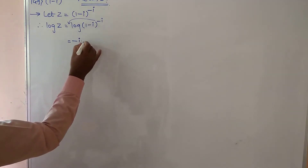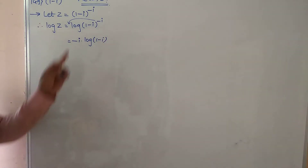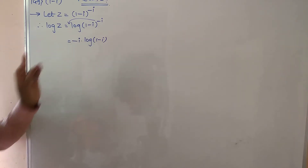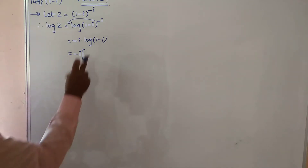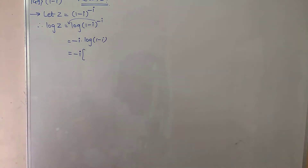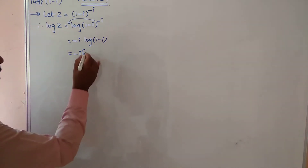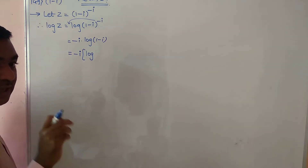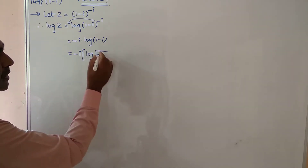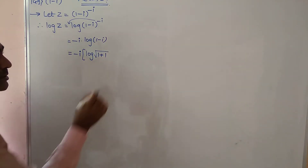Using the rule log(m^n) = n·log m, this becomes log z = -i · log(1 - i). Now here it is log of a complex number (a + ib). The formula for log(a + ib) is log|z| + i·amplitude(z), where |z| = √(a² + b²) and amplitude = tan⁻¹(b/a).